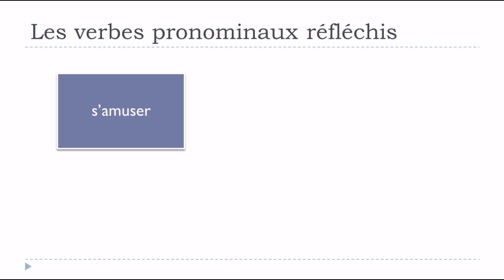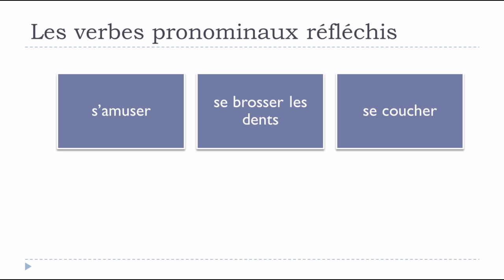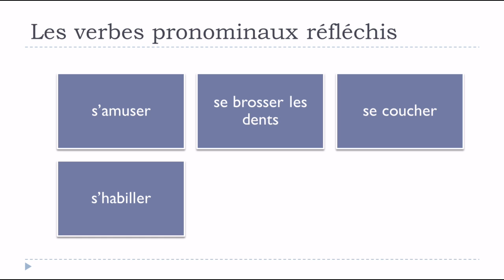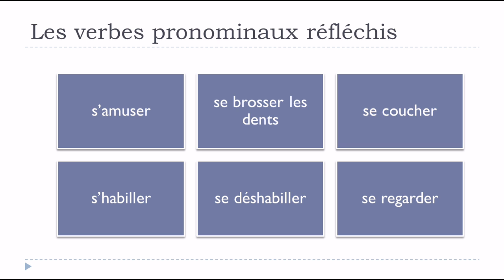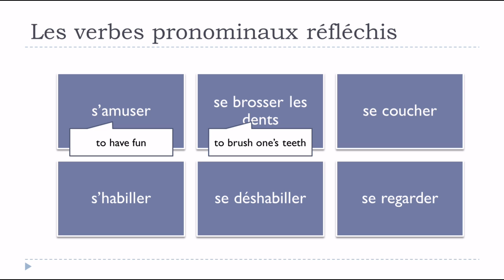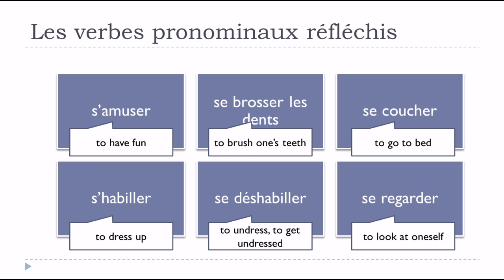Another series of verbs in this category: s'amuser, se brosser les dents, se coucher, s'habiller, se déshabiller, se regarder. Now that you have an idea of what les verbes pronominaux réfléchis are, let's see how to conjugate them, starting with the present tense form.